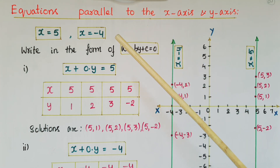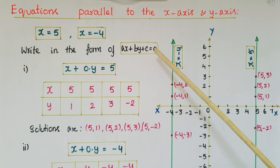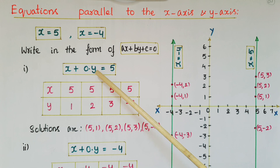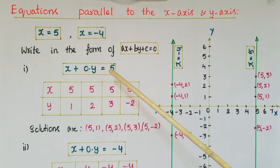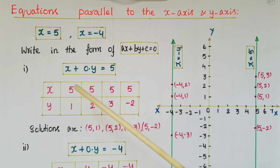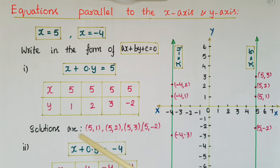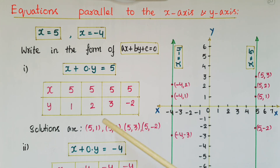First, we write each equation in the form ax + by + c = 0. So x = 5 can be written as x + 0·y = 5. Then we find a minimum of two solutions. Here the x-coordinate is always 5 and y can be any real number. I have taken y values 1, 2, 3, and -2, giving solutions (5,1), (5,2), (5,3), and (5,-2). You can assume any y value.